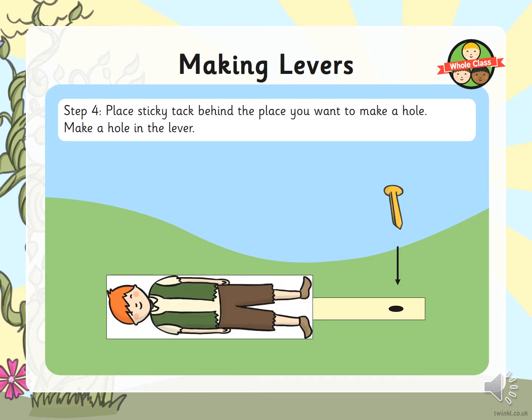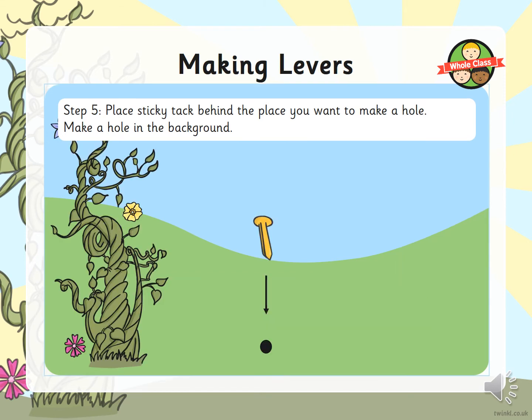Then put some blue tack behind the place where you want the hole and make a hole in the lever, pushing the split pin through. You also want to make a hole in the background where you want it — place blue tack behind that spot and again use the split pin to push through.